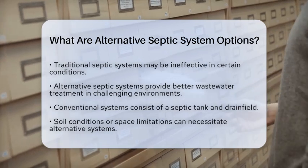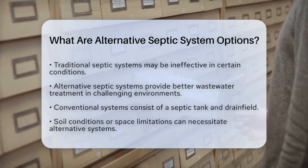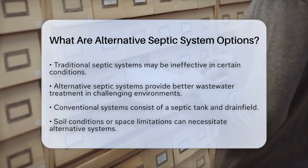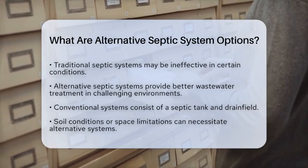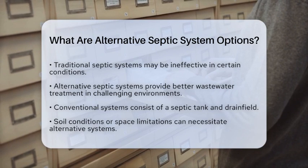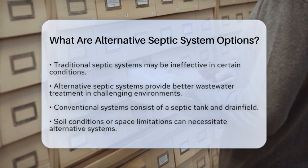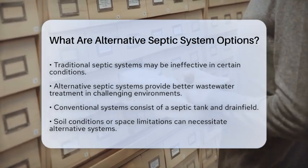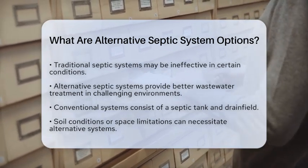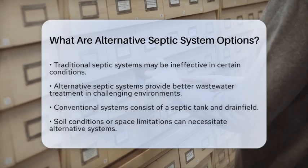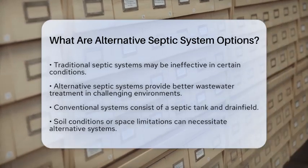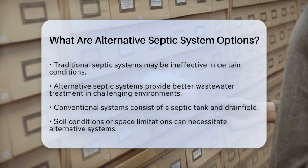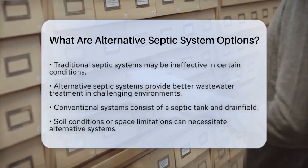Let's break down the basics first. A conventional septic system usually consists of a septic tank and a drain field. The tank separates solid waste from liquid effluent, which is then dispersed into the soil. However, in some locations, this setup may not work well due to soil conditions or space limitations. That's when alternative systems become necessary.